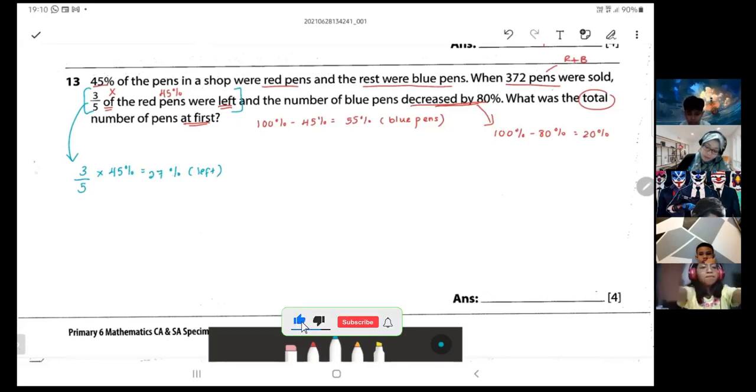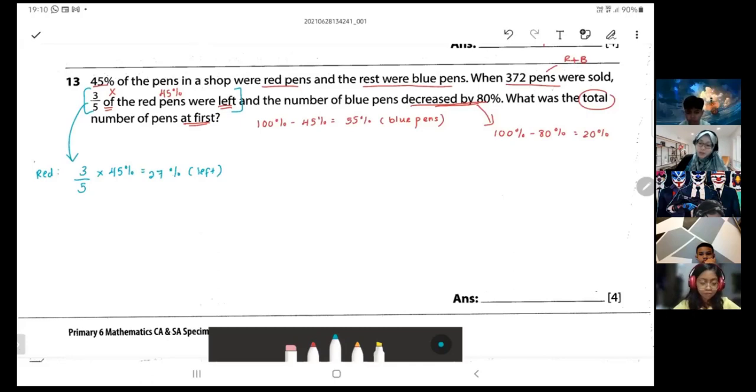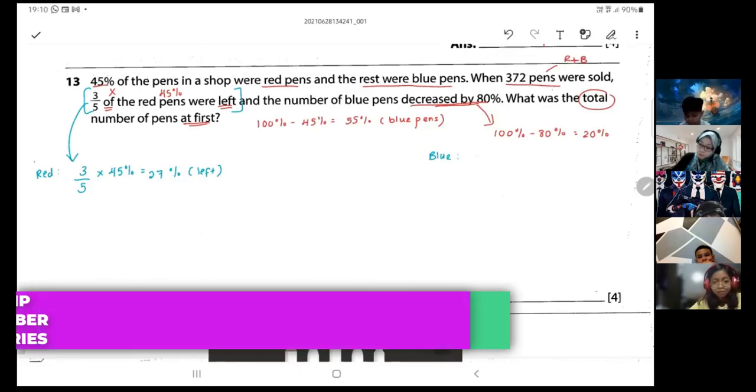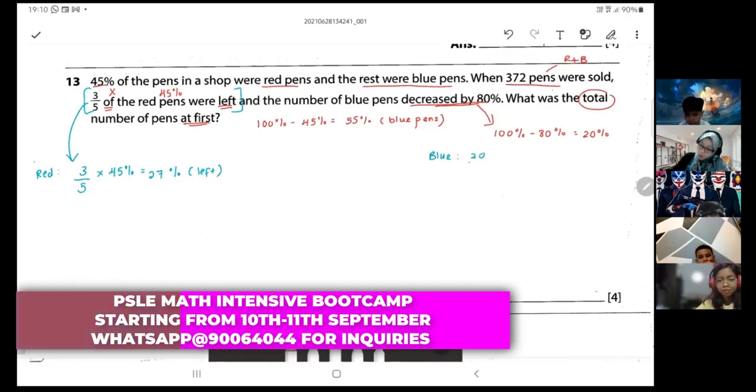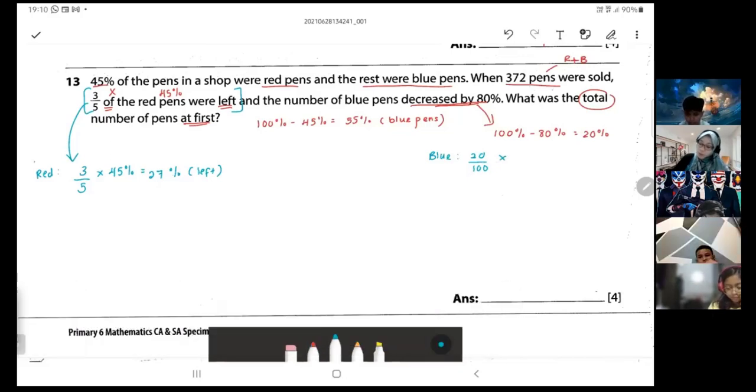Now let's tackle the blue one. The blue equals to 20 over 100 times how many were the blue pens at first? 55 percent. So 55 percent times 20 over 100 equals to 11 percent. This is the leftover, so this is what was sold.